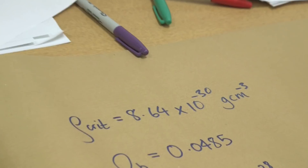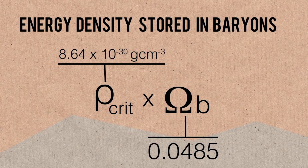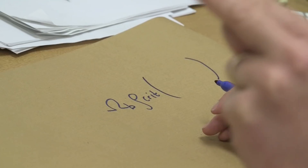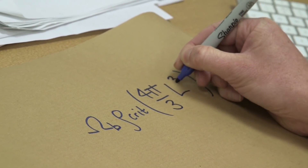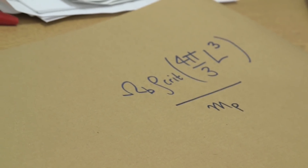To start off, we're going to work out how many baryons — protons and neutrons — there are in total. First, we calculate the energy density stored in baryons: that's just the baryon fraction times the overall density. To get the total mass stored in baryons, we multiply by the volume of the universe, which is a sphere of that radius: 4π/3 times radius cubed. Then, since baryons are protons and neutrons with essentially the same mass, we divide by the mass of one proton to get the number of baryons.